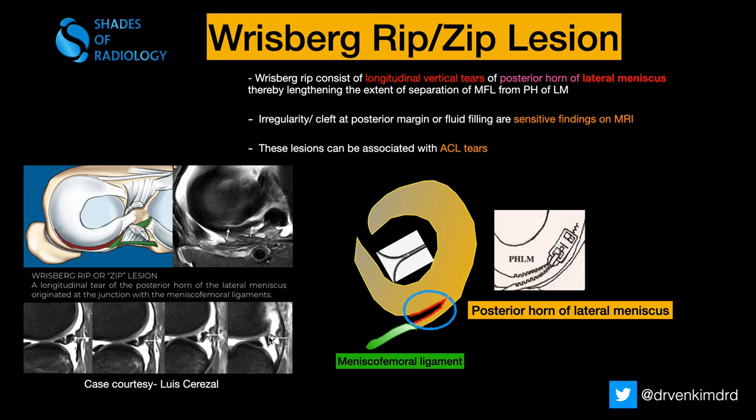One important point to remember: there is another entity called a pseudo tear. Sometimes the attachment of the ligament of Wrisberg can mimic a tear, so we need to carefully evaluate it, which can be difficult. If it is a pseudo tear, it will not be seen in all planes — pseudo tear appears only in the sagittal plane. In the axial planes, you don't see such a tear because of its course of attachment to the posterior horn of the lateral meniscus.